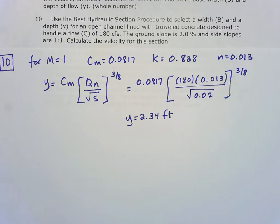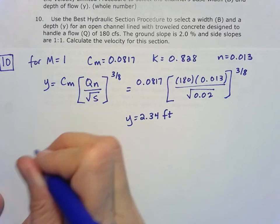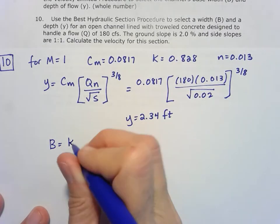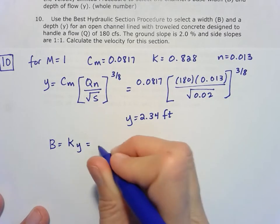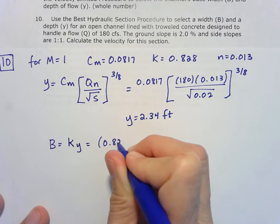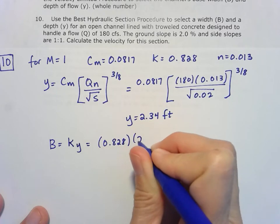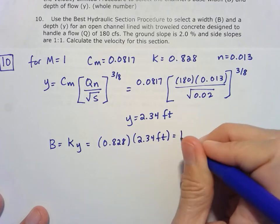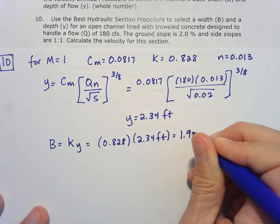Once we know Y, we can figure out B, because from our formula sheet, B is just equal to that factor K times Y. And in this case, K was 0.828, and my Y, again, 2.34 feet. So that leaves me with a B of 1.94 feet.